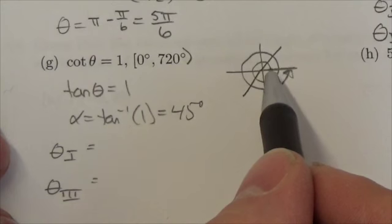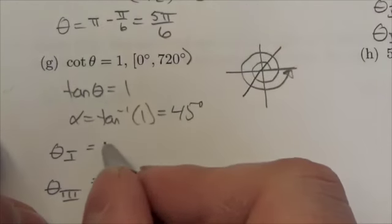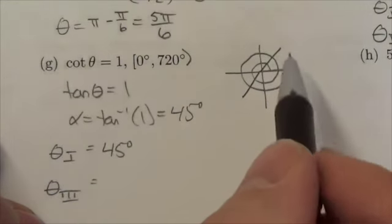So the first rotation in the first quadrant takes us up to here. It's just from 0, 45 degrees over. So the first angle there is 45 degrees.